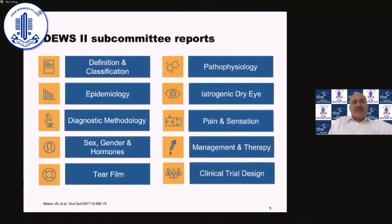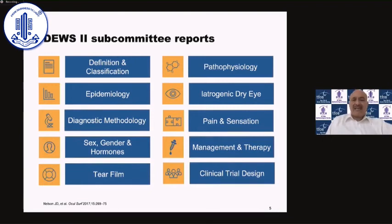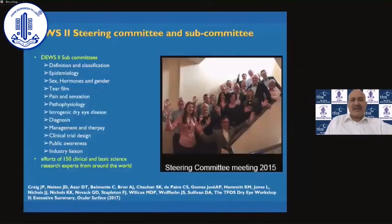There were 13 subcommittees. Clinicians were divided based on their interest, experience, and publication history — all listed here — and each produced a separate subcommittee report. There was also an overall harmonized report combining all the subcommittees. The steering committee comprised about 15 doctors and scientists from around the world, who first met in San Francisco, where the DEWS II process began.